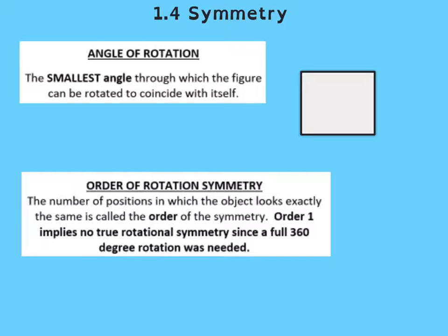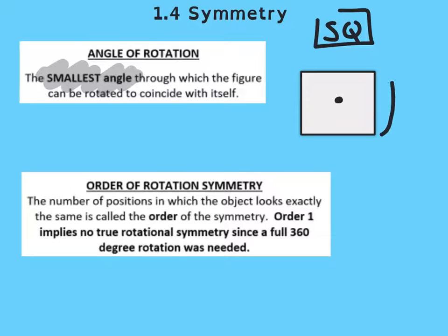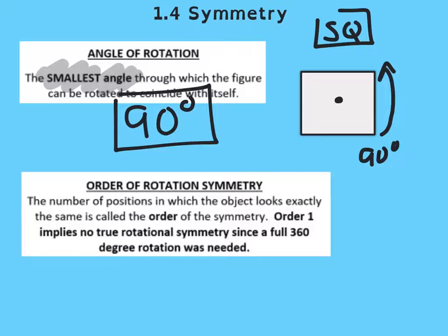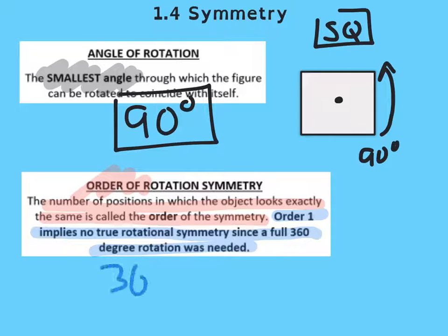The angle of rotation is always the smallest angle that works. So if I was rotating a square, that first increment or turn of 90 degrees would map it onto itself — so the angle would be 90 degrees. The order is a different thing: it's the number of positions in which the shape looks exactly the same. If you have to turn the shape all the way around before it maps onto itself, that's 360 degrees for the angle and the order is 1. An order of 1 really means there is no rotational symmetry, because you took the full turn just to get it back to its start.